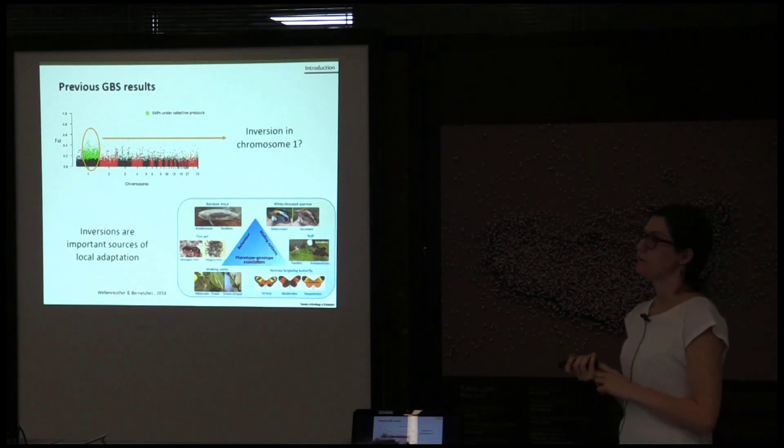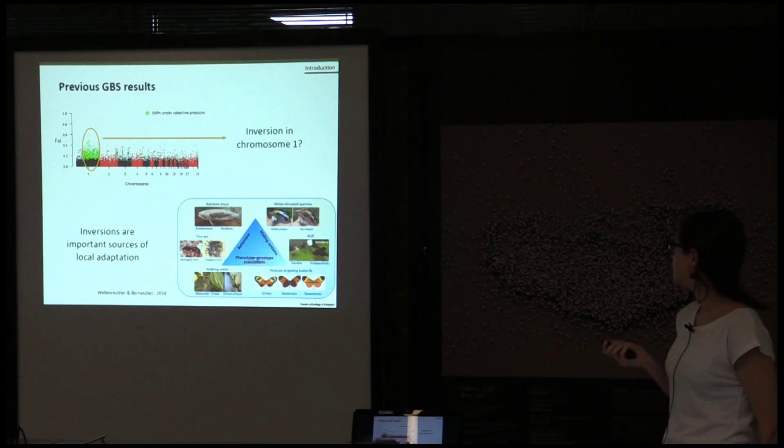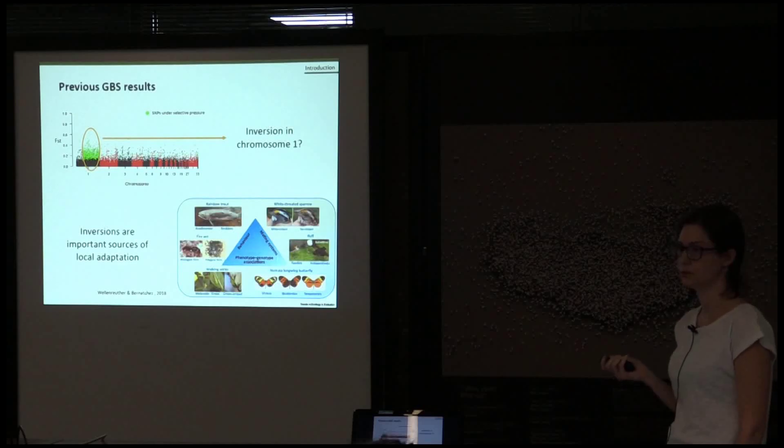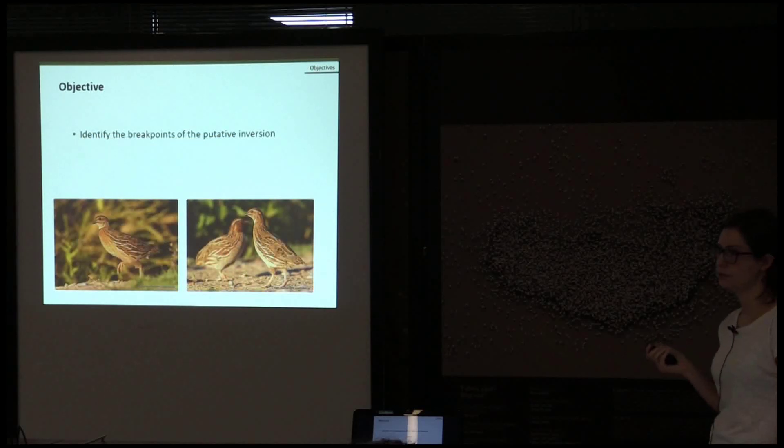We think that this region could represent an inversion, and there is growing evidence in other taxa that inversions play an important role in local adaptation. For example, in rainbow trout, the inversions play a role as they determine if a population is migrant or is resident, and in other cases, inversions are related with the pigmentation or the coloration of individuals. Therefore, in this project, we wanted to identify the breakpoints of this putative inversion.